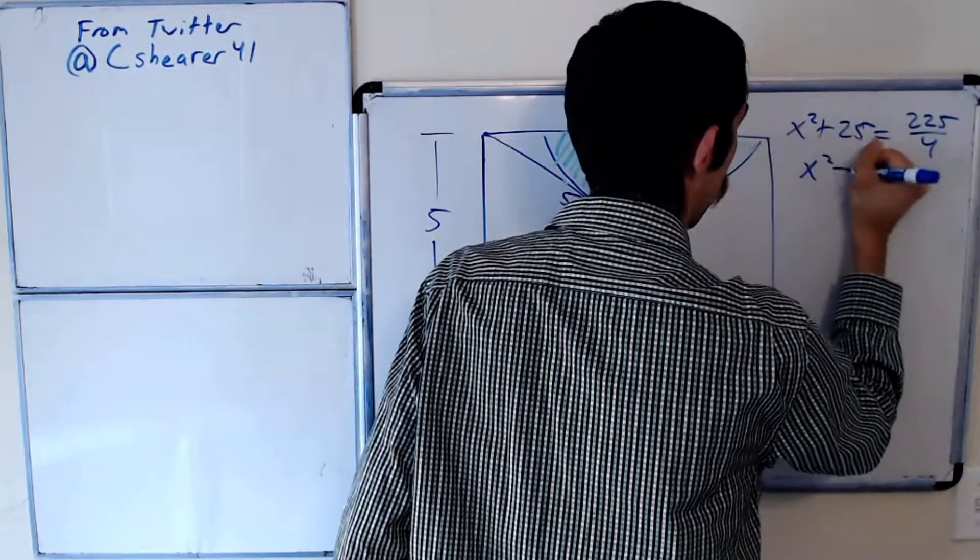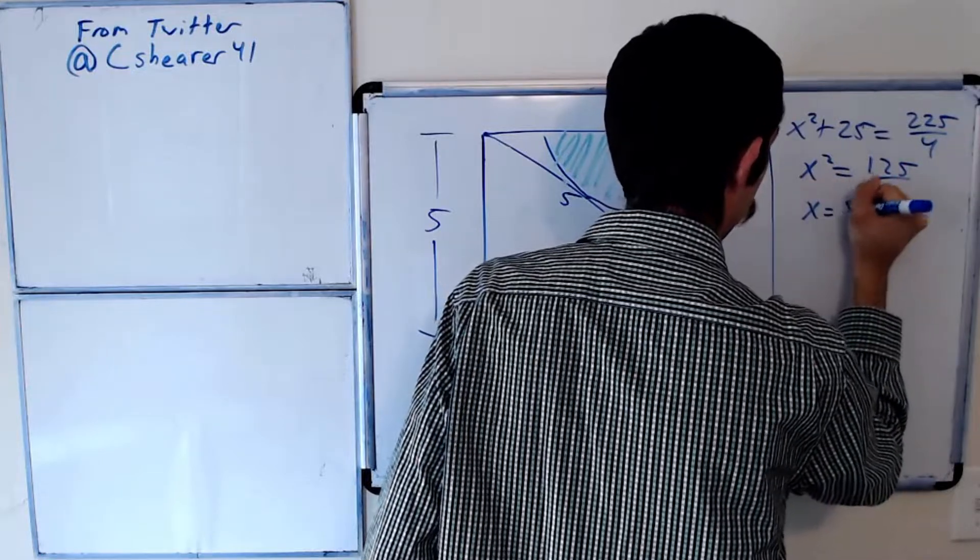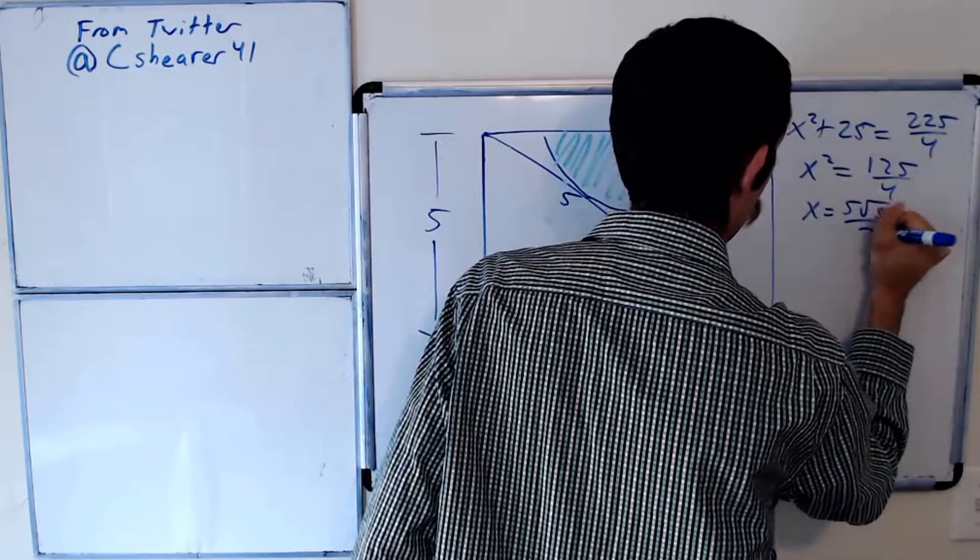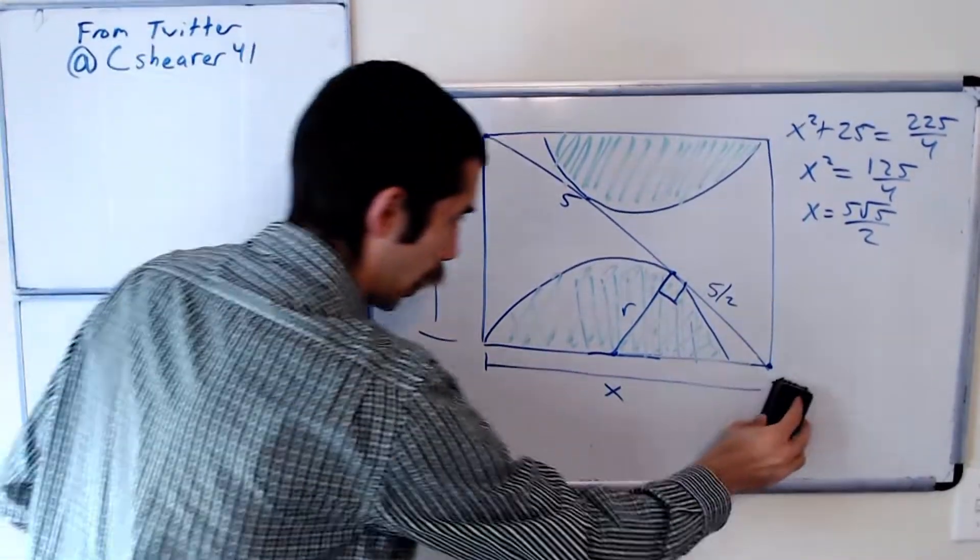Getting x, we have x squared is equal to 125 over 4, or x is equal to 5 square root of 5 over 2. So let's put that in for x.